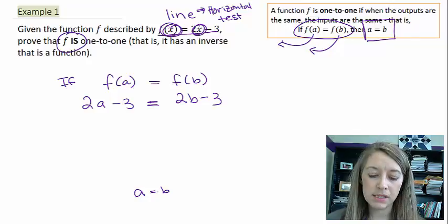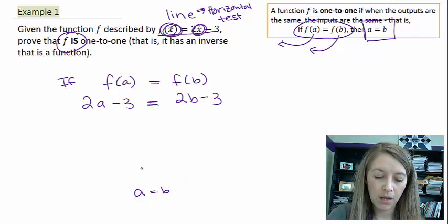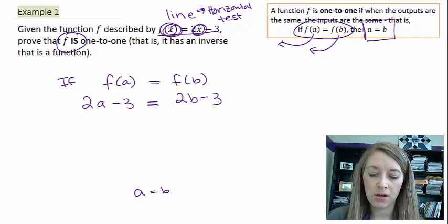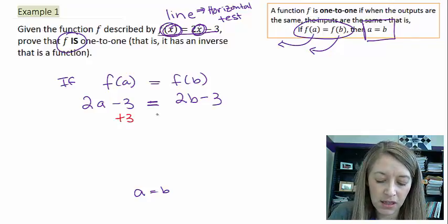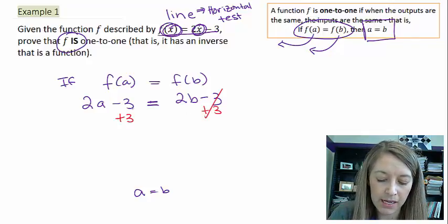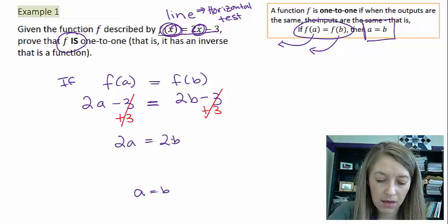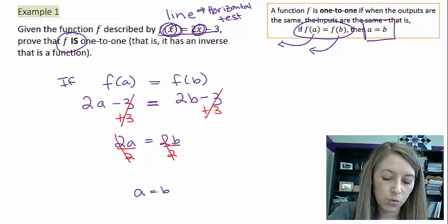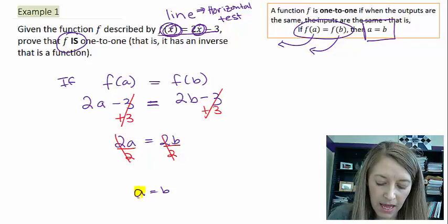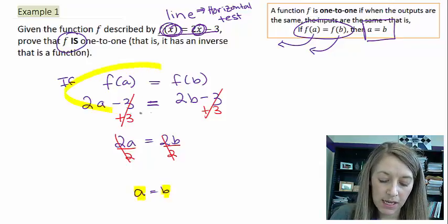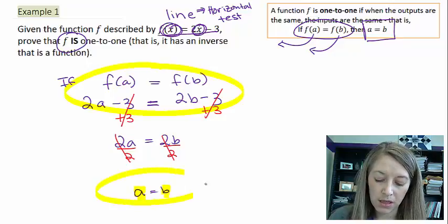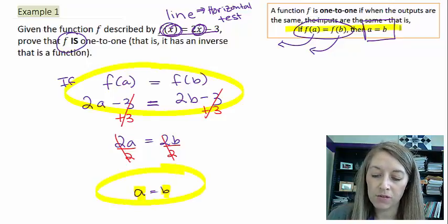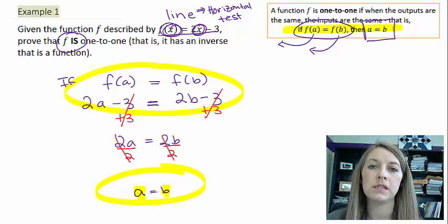So, all I need to do now is to simplify this and work it down to a is equal to b. Well, this one's pretty easy. I just cancel out things from both sides. So, the very first thing that I do is I add 3 to both sides, which those cancel out. And then, I divide by 2 from both sides. And so, the 2's cancel out. And then, of course, we get what we want it to be, a is equal to b. So, I started out saying if this is true, then this is also true, meaning I've just proved that my function is 1 to 1.